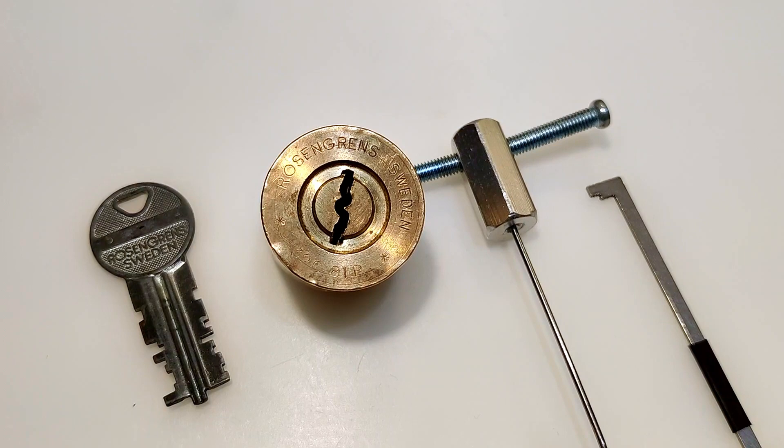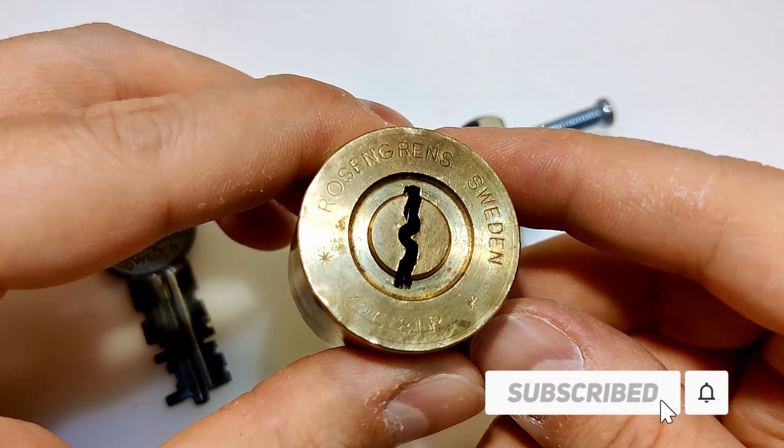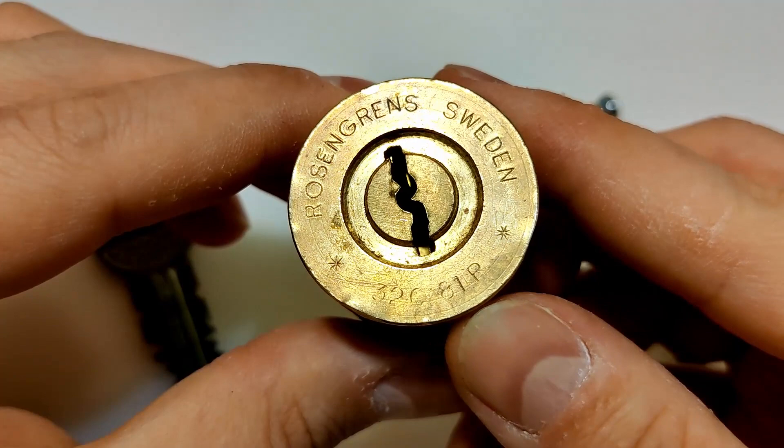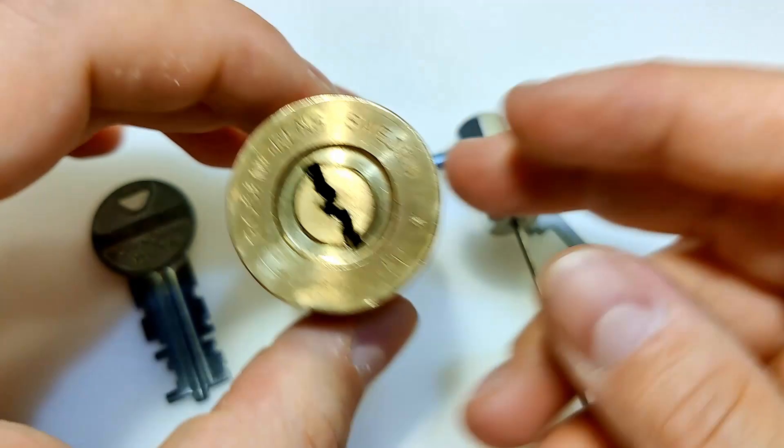Hi! Today I have a very cool lock for you guys. It's this Rosengrens made in Sweden safe or safe deposit box lock. It's a 32C81P. Hopefully you can read this. It's a disk lock with this very interesting key.